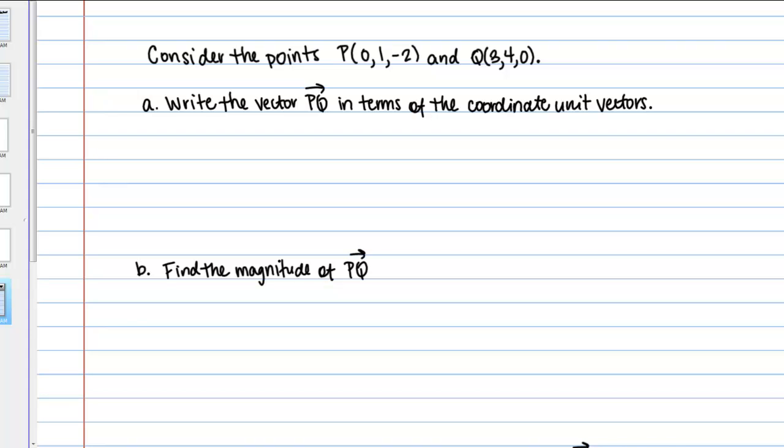Part A says to write the vector PQ in terms of the coordinate unit vectors. When we say coordinate unit vectors in three dimensions, we're talking about the vectors I, J, and K. Vector I points in the positive X direction, vector J in the positive Y direction, and vector K in the positive Z direction, all with a magnitude of 1.